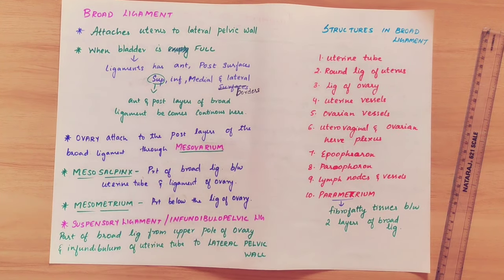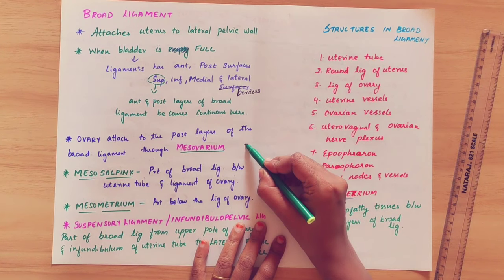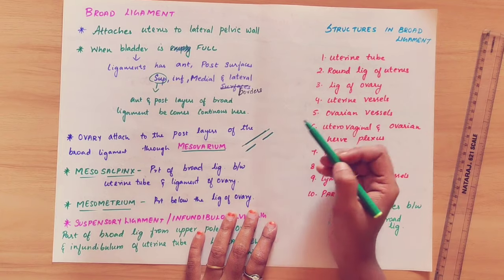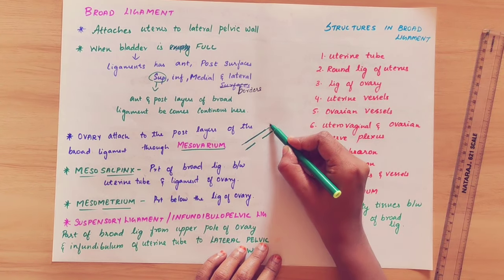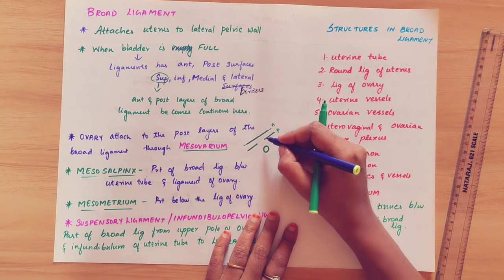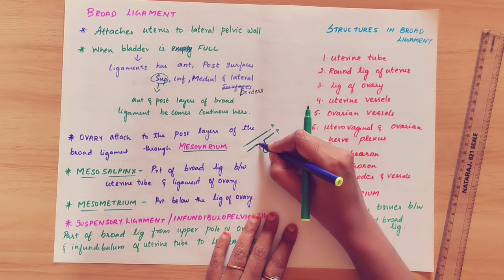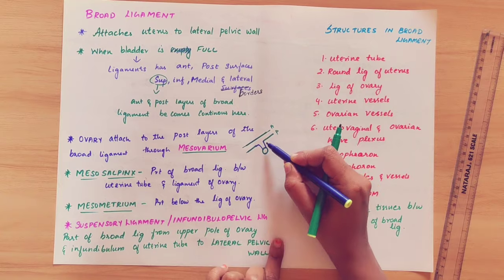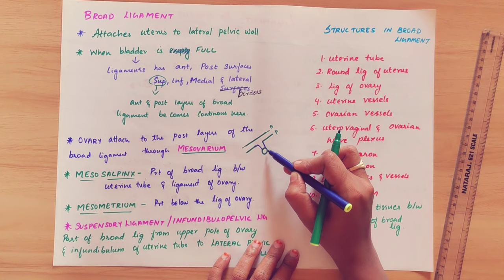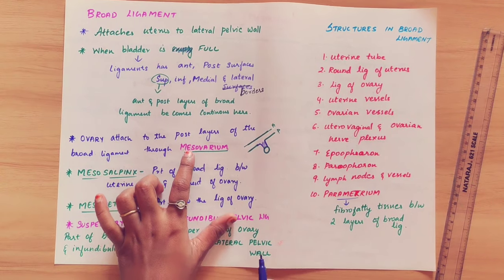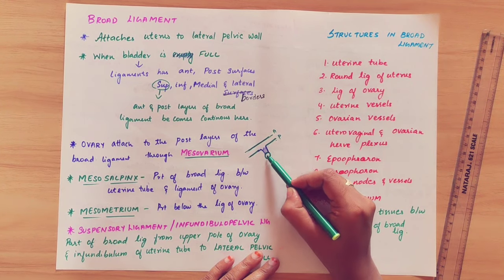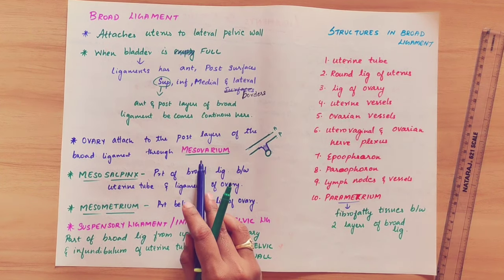The mesovarium is the region where the posterior layer of the broad ligament connects to the ovary. Both the anterior and posterior layers are present, but specifically the posterior layer of the broad ligament is attached to the ovary in this region, which we call the mesovarium.